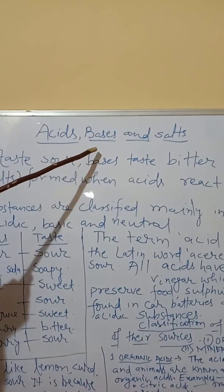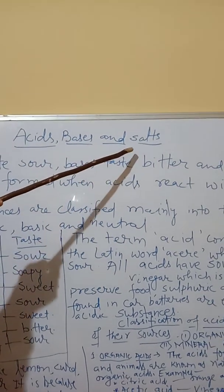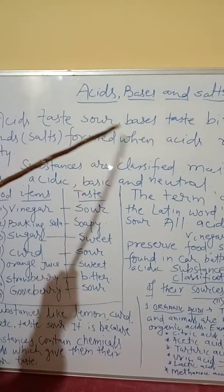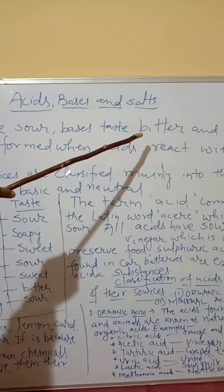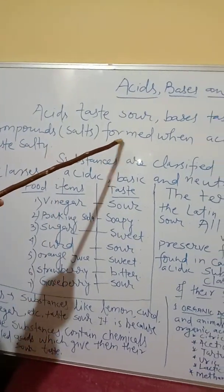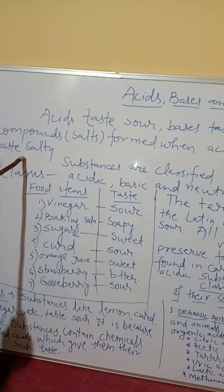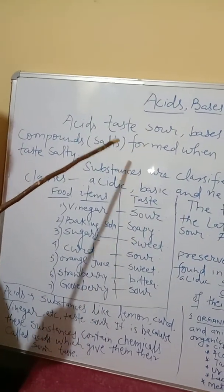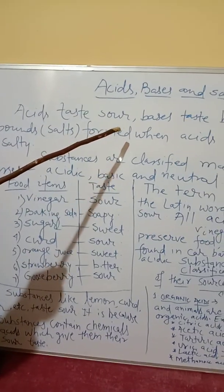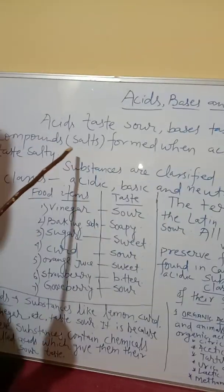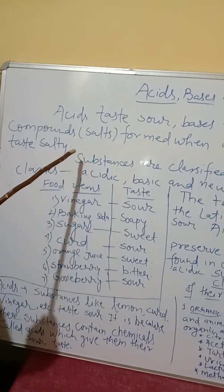The chapter is Acids, Bases, and Salts. So, acid tastes sour, base tastes bitter, and the compound salt is formed when acid reacts with base, and the taste is salty. So three tastes are there: acid tastes sour, base tastes bitter, and neutral substances are salty.